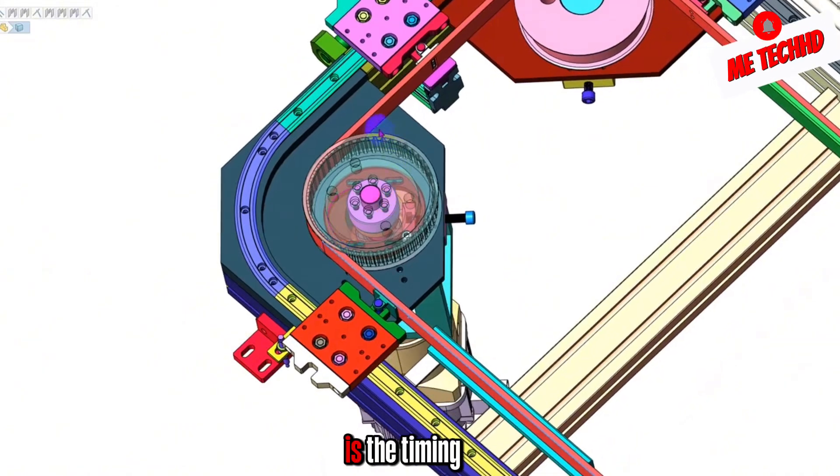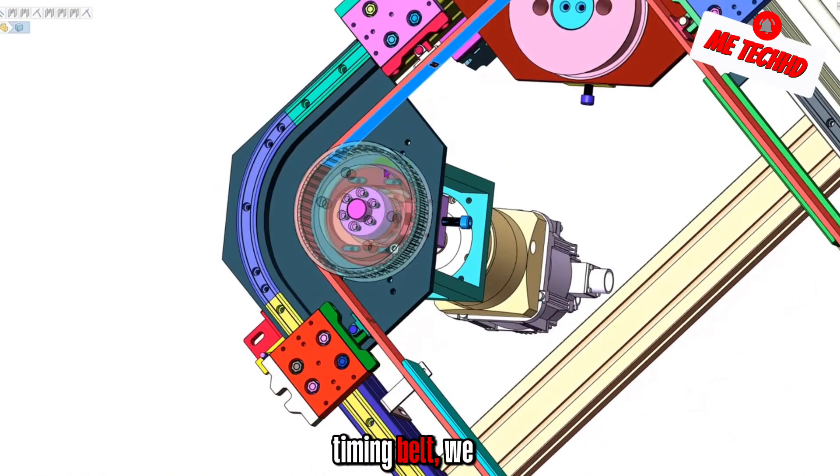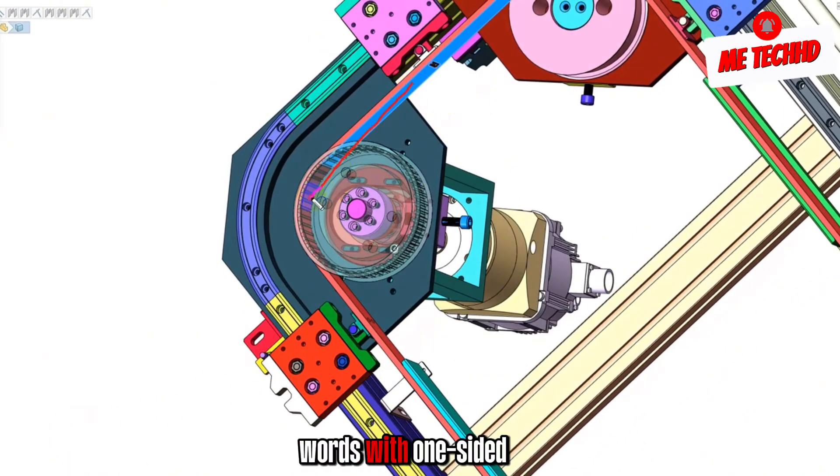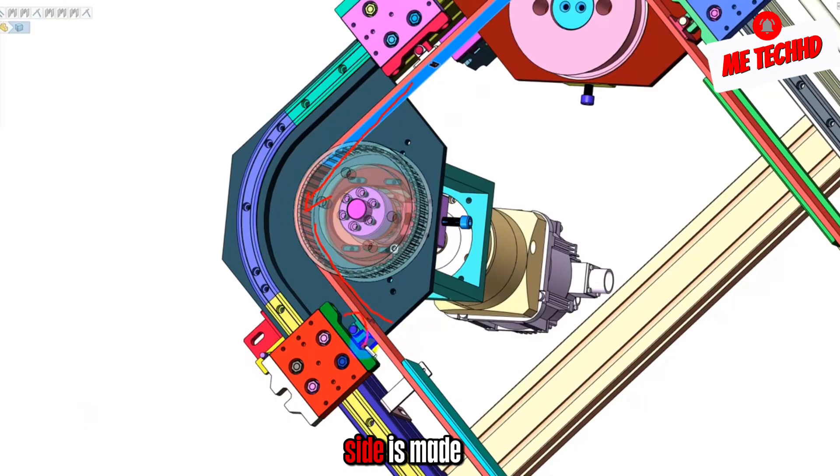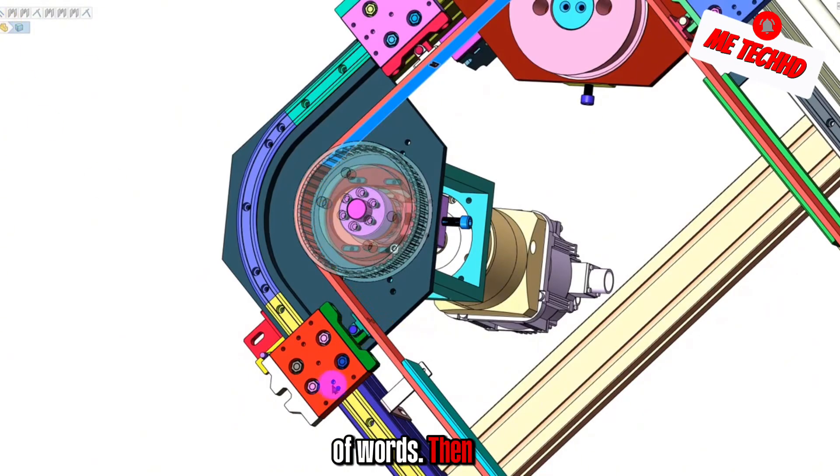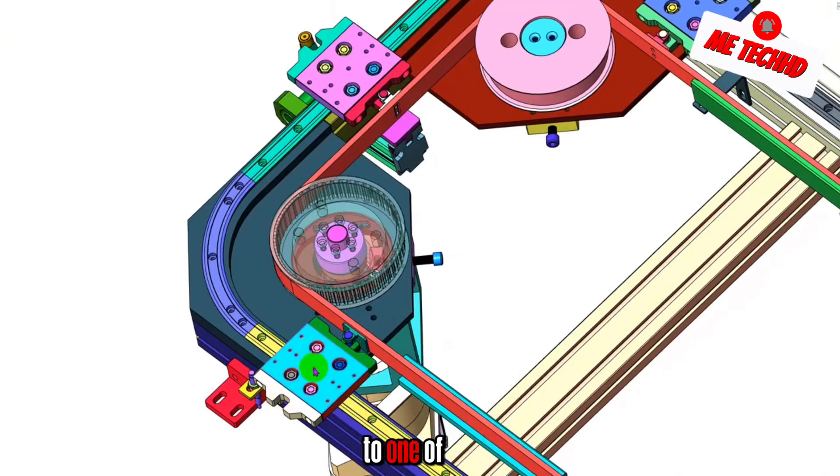And this is the timing belt. As for the timing belt, we are usually single-sided words with one-sided words. And this side is made of words. Then how can this position be connected to one of our circular stations?